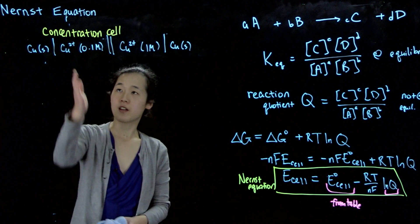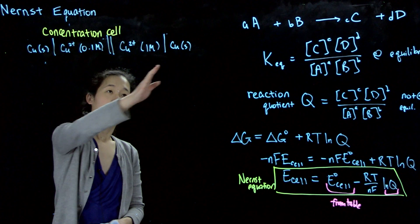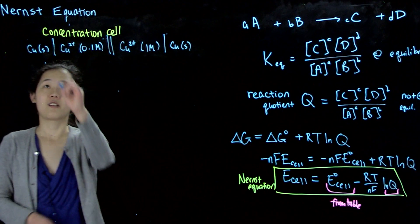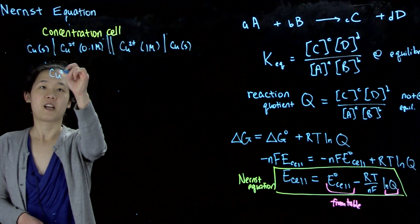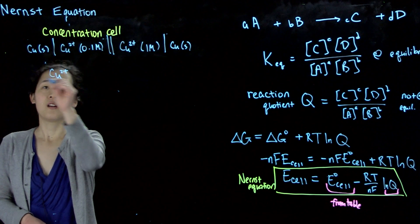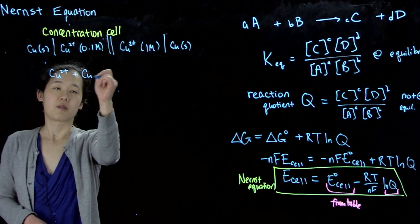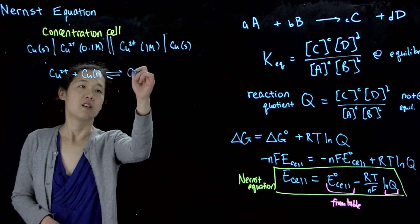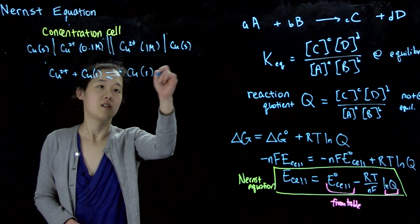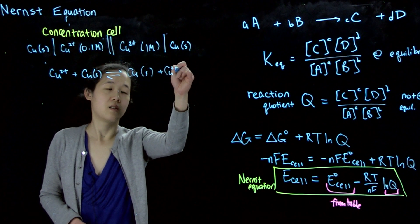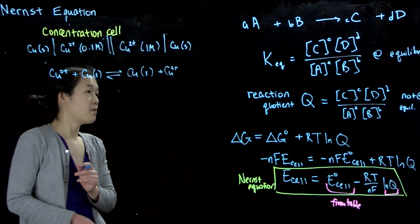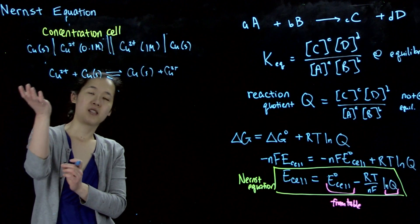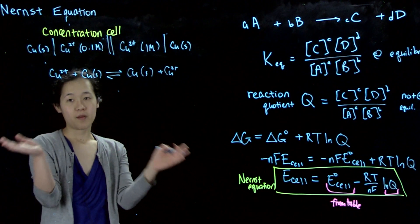On the left side is our anode where we do oxidation; on the right side is the cathode. Our fully balanced reaction is a self-exchange reaction: Cu²⁺ plus Cu(s) goes back and forth to produce Cu(s) and Cu²⁺. The question is how can we find the cell potential — and here is a great application of the Nernst equation. We can do it using half reactions.